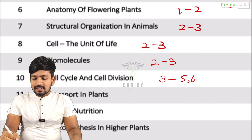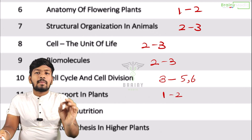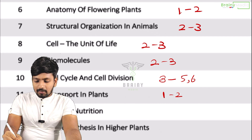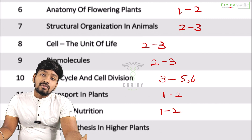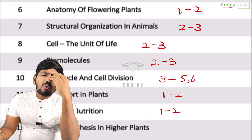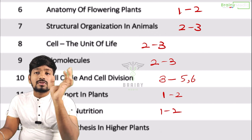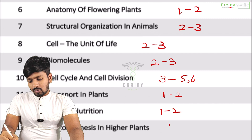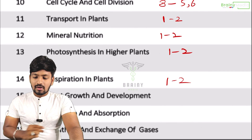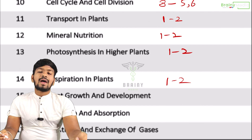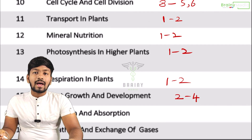Transportation in plants: sometimes one to two questions. Mineral nutrition: one to two questions. Plant physiology weightage is less overall. Photosynthesis: one to two questions. Respiration: one to two questions. Plant growth and development is the highest-weighted plant physiology chapter with four questions.